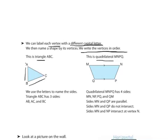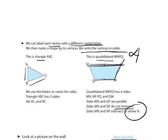Here we have a quadrilateral. A quadrilateral, remember, is any four-sided shape, and we've labeled it MNPQ. So our quadrilateral name would be quadrilateral MNPQ. It has four sides. We could say that side MN is parallel to side QP — they would not intersect. Side MN and side NP would intersect at vertex N. So those letters help you be very specific, so there's no question about what we are talking about.